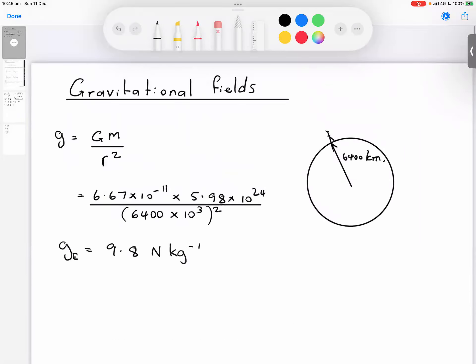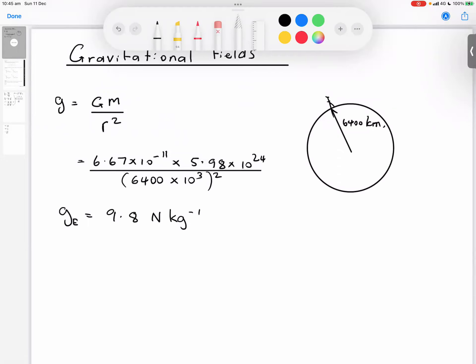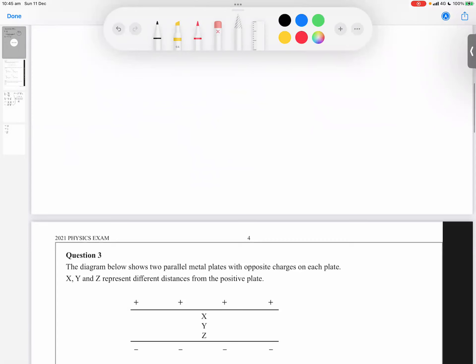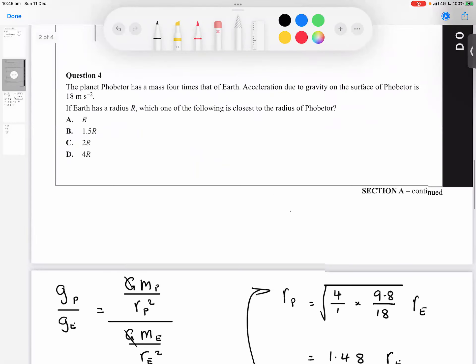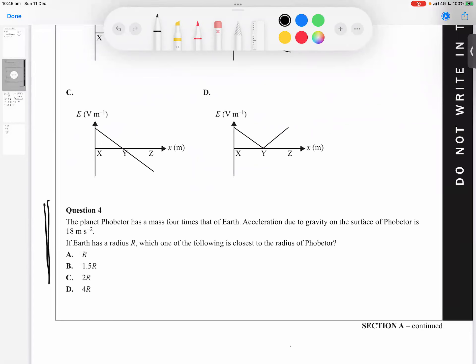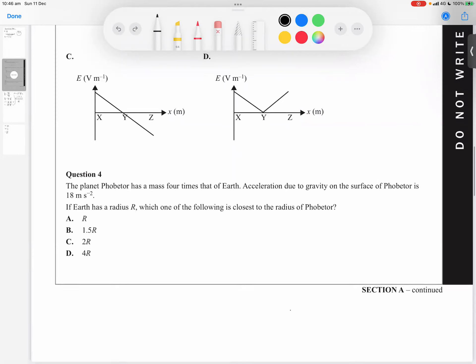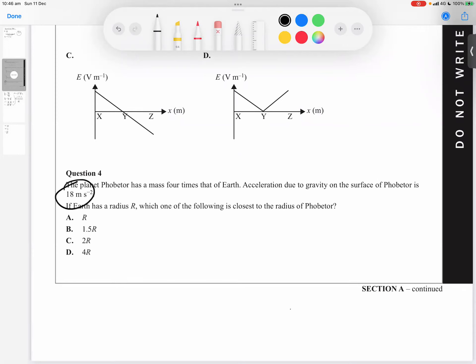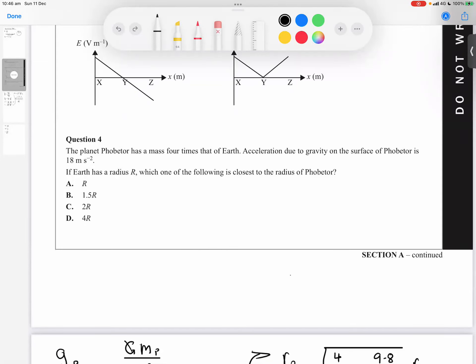Now what I want to look at here—this is fairly simple so it'd be required that you'd be able to do a calculation like that. But where it gets a bit more complicated is a question like this which was on the 2021 examination, question four in section A. It's when we compare gravitational field strengths on one planet compared to another planet—say, for example, earth to the planet called Phobitor, which is orbiting a distant pulsar. Phobitor is an exoplanet. Phobitor has a gravitational field of 18 meters per second squared and has a mass four times that of earth.